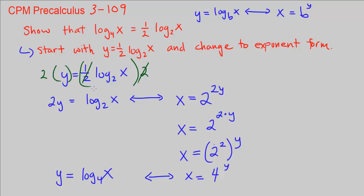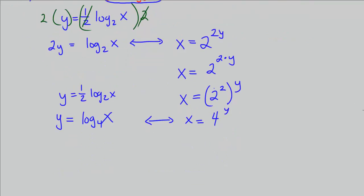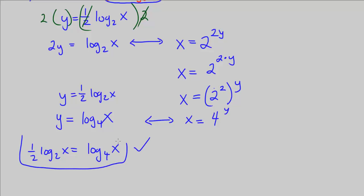So what we've shown is that both expressions are equal to the same y. We started with y equal to 1 half log base 2 of x, and using the same y variable throughout, we arrived at y equal to log base 4 of x. Both y's are equal to different expressions, so we can substitute and conclude that 1 half times log base 2 of x equals log base 4 of x — and that's the proof. That's CPM Pre-Calculus Chapter 3, Number 109.